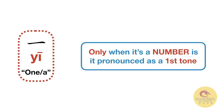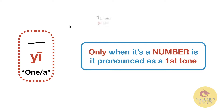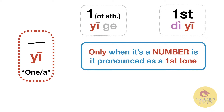When 一 is a number — for example, 一个 (yīgè), as in 'give me one beer, not two, not three, one beer' — or first, 第一 (dìyī), or a thousand, 一千 (yīqiān), it keeps its first tone.